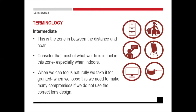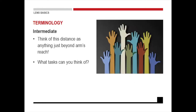Intermediate is the zone in between your distance and your near. Consider that most tasks we do are in fact in this zone, especially when indoors. When we can focus naturally, we take it for granted. If we don't use the correct lens, we need to make many compromises. So anything beyond your 30 centimeters of reading up to your distance vision — cooking, writing on a board, anything usually in an office environment as well.